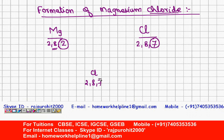Both chlorine atoms have configuration 2, 8, 7. From magnesium's 2 electrons, 1 electron will be given to the first chlorine atom and 1 electron will be given to the second chlorine atom. So in all cases there will be 8 electrons in the last orbit.